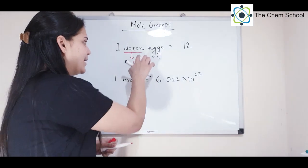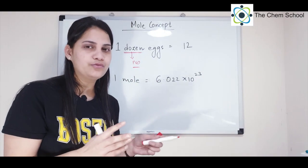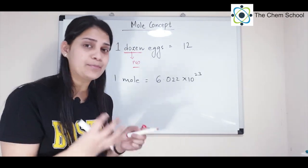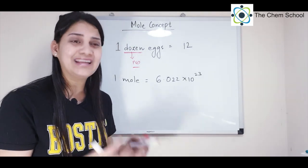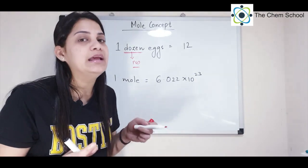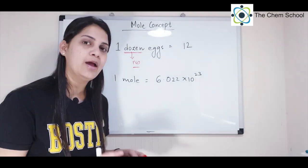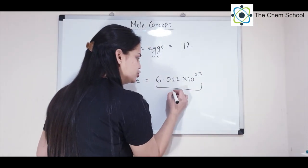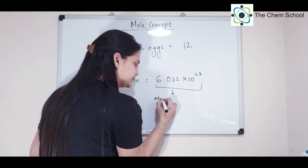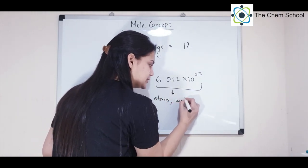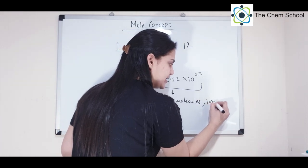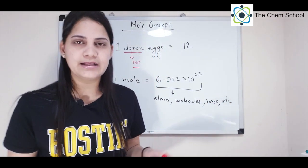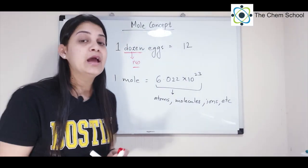Dozens are used for bigger substances, but when we talk about atoms, ions, and molecules, we cannot use dozens. So we use moles. Remember that this number — 6.022 × 10²³ — is used to indicate atoms, molecules, ions, and other atomic particles. This is what we describe in moles.